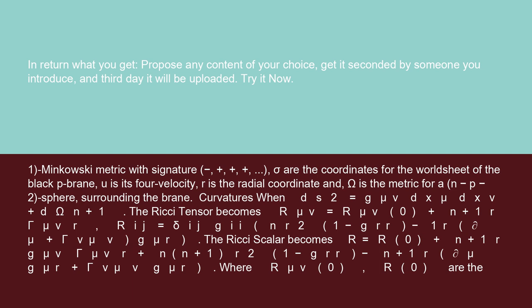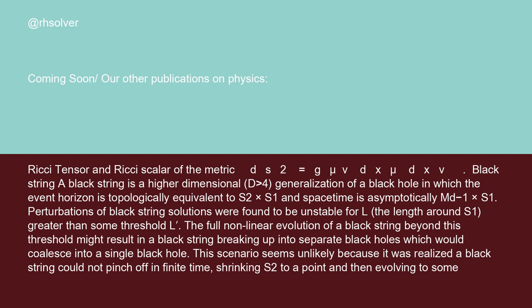Curvatures: when ds² = g_μν dx^μ dx^ν + dΩ²_(n+1), the Ricci tensor becomes R_μν = R⁰_μν + (n+1) Γ^r_μν − (1 − g^rr)^(−1) ∂_μ ln√g + Γ^ν_μν g^μr. The Ricci scalar becomes R = R⁰ + (n+1) g^μν Γ_μν^r + (n+1) r² (1 − g^rr) − (n+1) ∂_μ g^μr + Γ^ν_μν g^μr, where R⁰_μν and R⁰ are the Ricci tensor and Ricci scalar of the metric ds² = g_μν dx^μ dx^ν.